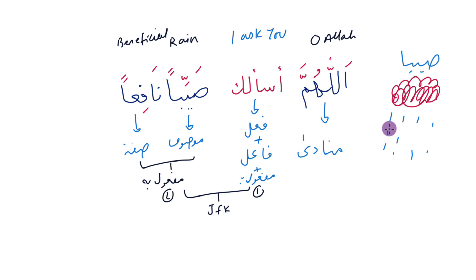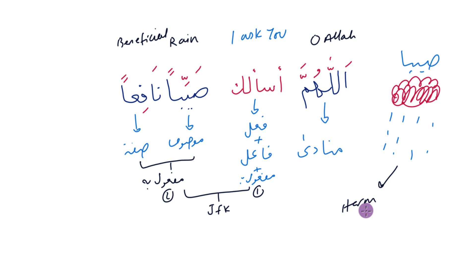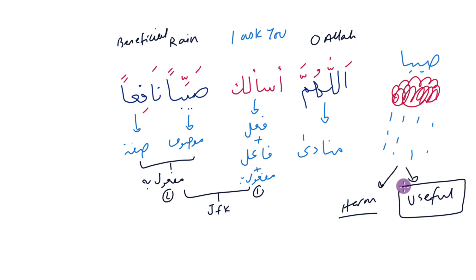Allah is in control of all the weather, every single thing. That's why we turn to Allah — we have tawakkul, trust in Allah subhanahu wa ta'ala. When we make our dua, it manifests our connection with Allah, the tawheed in our hearts manifests on our tongues. We ask Allah to save us from harmful rain and to grant us useful rain.